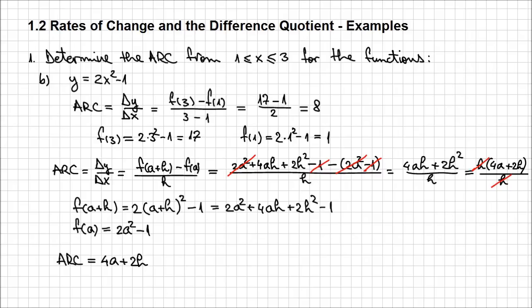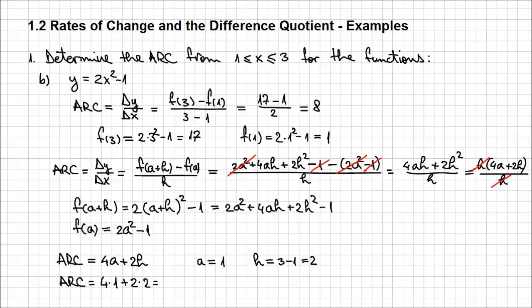This is the formula we can use to calculate the average rate of change for our function on basically any interval we want. In our case, we have the interval from 1 to 3. As we know, a represents the x-coordinate of the beginning of that interval, so a equals 1. And h represents the length of the interval — from 1 to 3, the length is 3 minus 1, which is 2. So the average rate of change is 4 times 1 plus 2 times 2, which is 8 — exactly what we determined earlier.